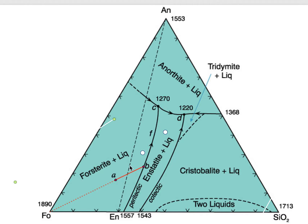So what happens when we combine these three? We're going to take a look at bulk composition A; in later videos, we'll look at compositions over here and then over here to see how things change. For composition A, there are two things to think about before we begin. The first is where it falls relative to this dashed line that separates the entire triangle into two sub-triangles. Anything that falls to the left of that dashed line connecting anorthite and enstatite will be a rock consisting of anorthite plus enstatite plus forsterite — the final rock, when done crystallizing, has to consist of just those three minerals, with no silica minerals.